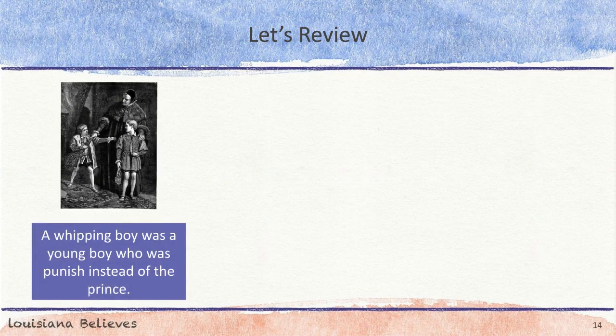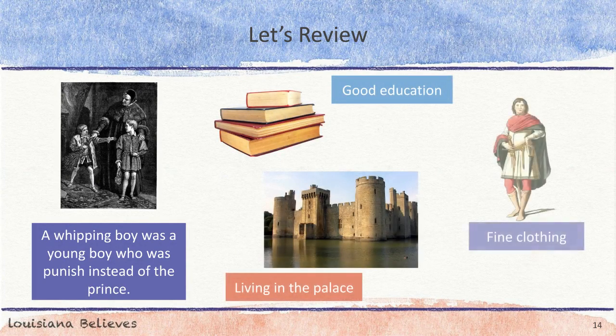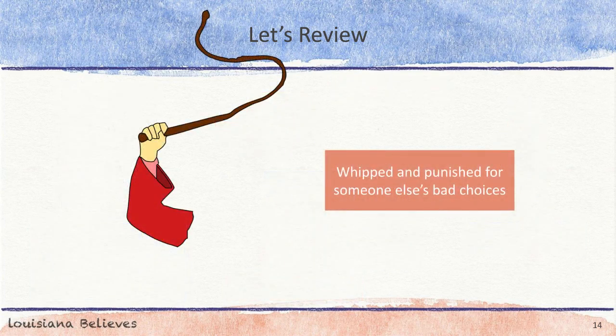A whipping boy was a young boy who was punished instead of the prince during the Middle Ages. Some of the benefits of this role were getting a good education, living in the palace, and having fine clothing and other things. A drawback was that whipping boys were whipped and punished for someone else's bad choices.